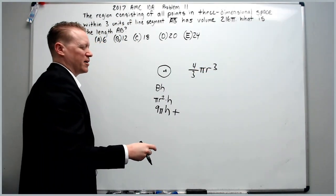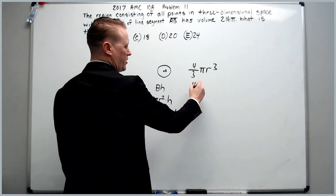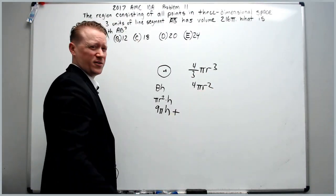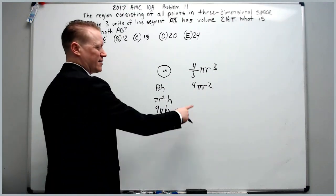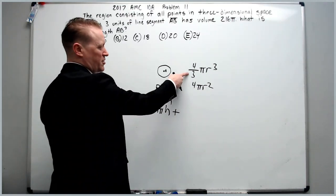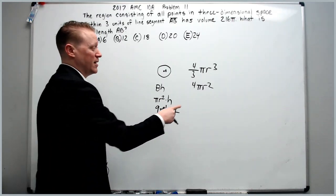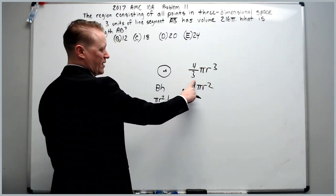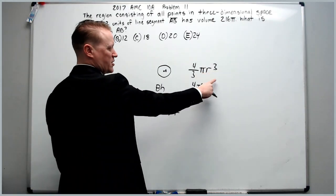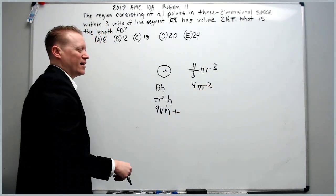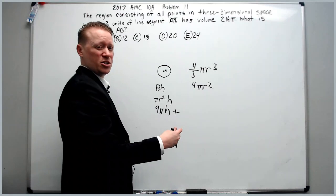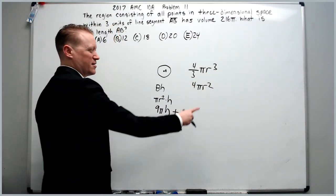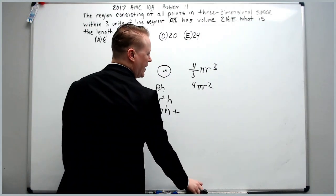We'll have 9πh plus the two hemispheres which combined make a sphere of radius 3. A good way to memorize whether you're thinking of the volume formula or the surface area formula is that the surface area of a sphere is simply the derivative of the volume. Area is associated with 2 dimensions and volume with 3 dimensions.